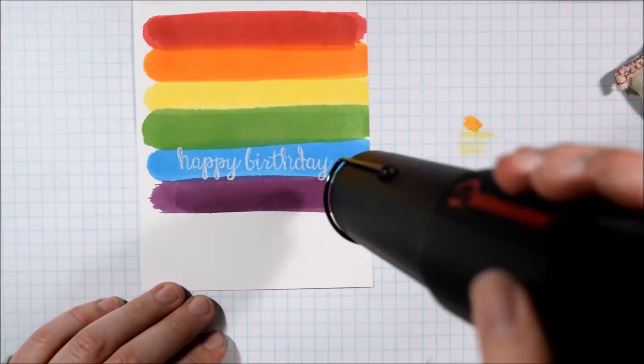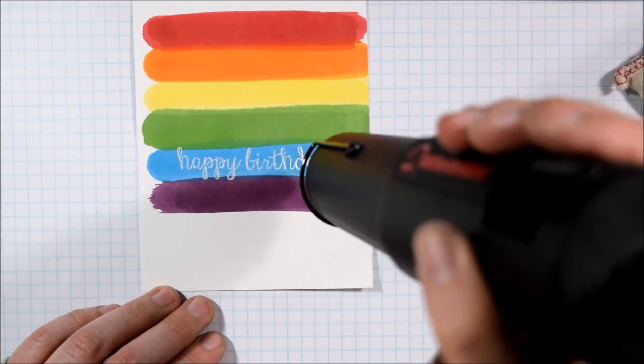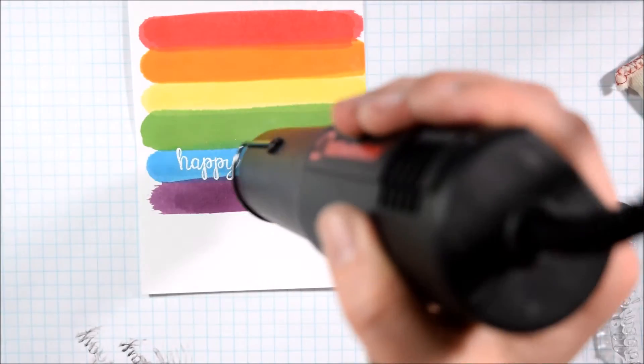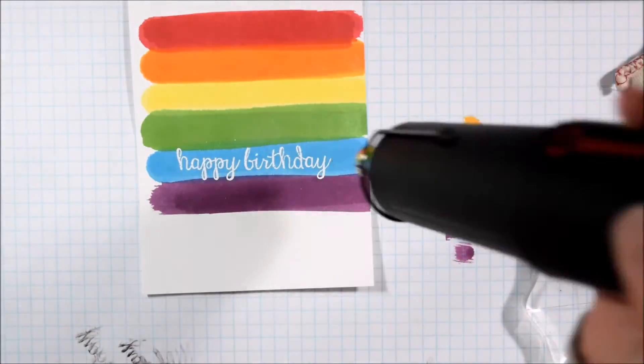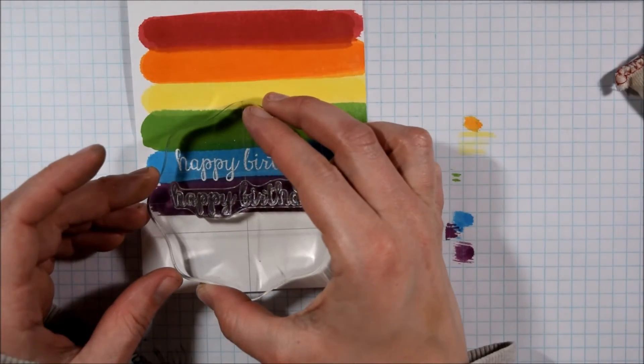Then I'm going to use the same happy birthday sentiment to add some extra interest to this card. And I'm going to heat it with my heat gun making sure that my heat gun is hot before I bring it to the paper to limit the curling.